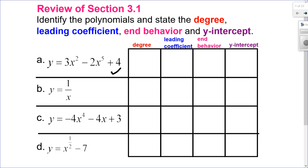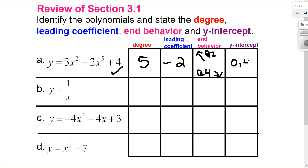Because I know this is a polynomial, I can state the degree, which is the highest exponent of x. The leading coefficient is the number in front of x to the exponent 5. The end behavior: since I have degree 5, which is odd, my arms go in opposite directions, and since the leading coefficient is negative, my end behavior goes from quadrant 2 to quadrant 4. My y-intercept is 0 and 4.